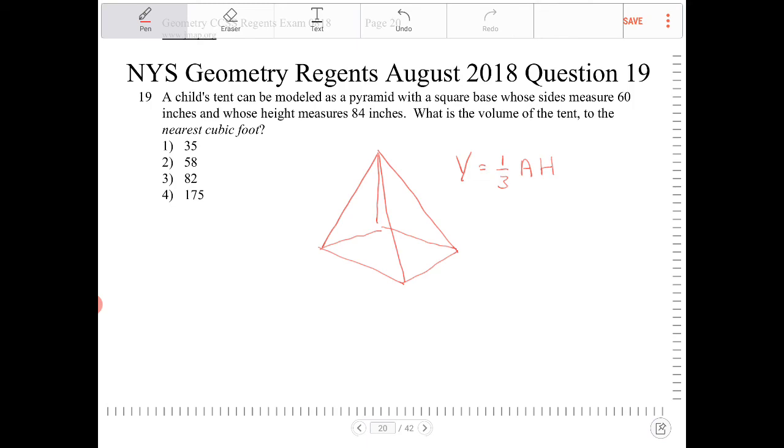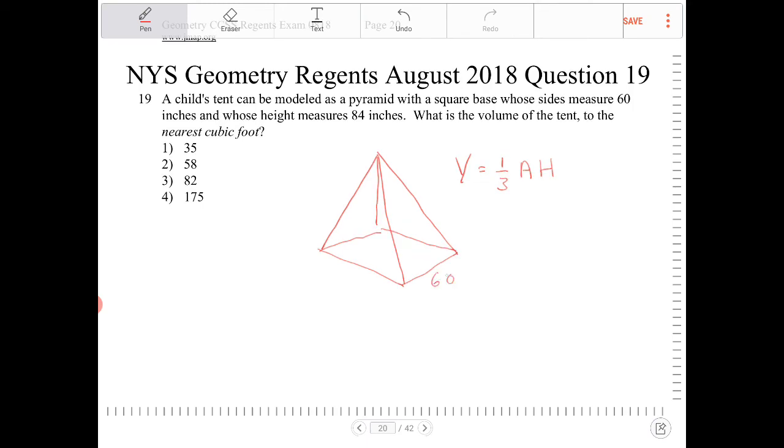The sides of the base measure 60 inches, so that's 60 over here, and all four of these are the same length. That means the area of the base is going to be 60 squared, and the height is 84.